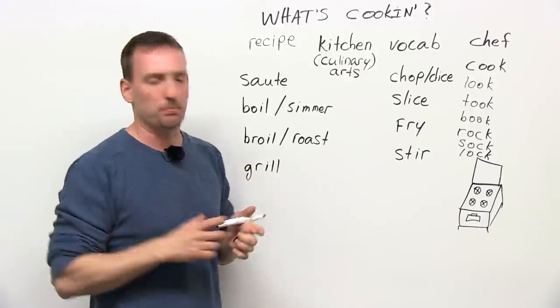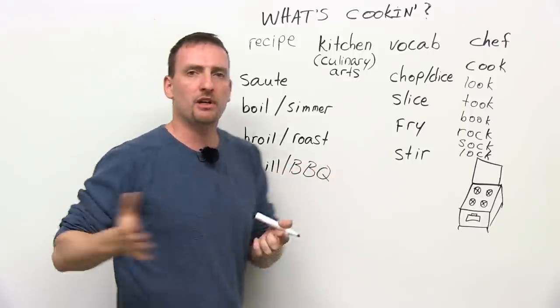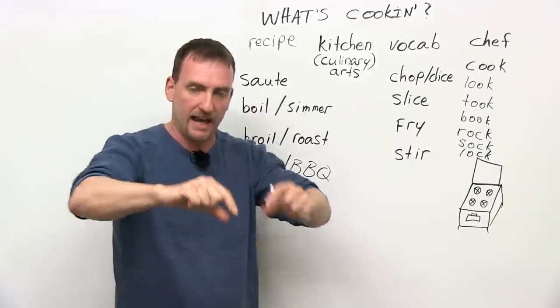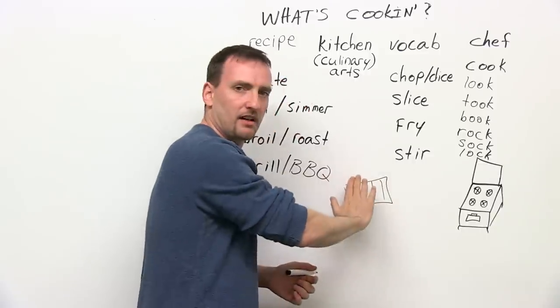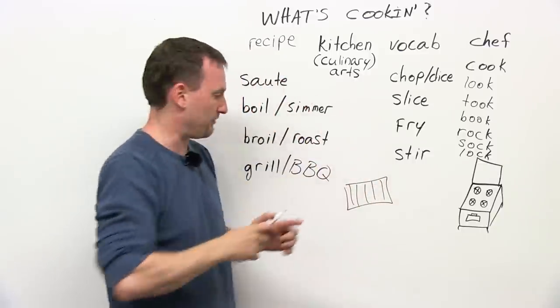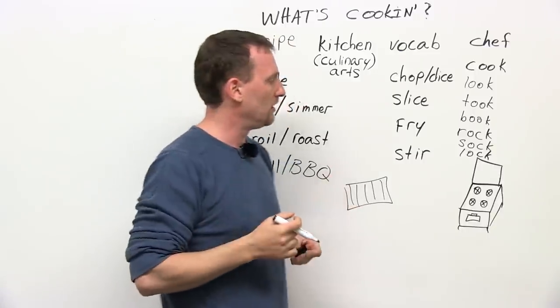Grill. Grill, like for example, when you barbecue. When you're barbecuing, you are grilling. You have the lines of the grill. You put your steak on it, then you flip it. That's grilling, usually with fire, coals, lines.